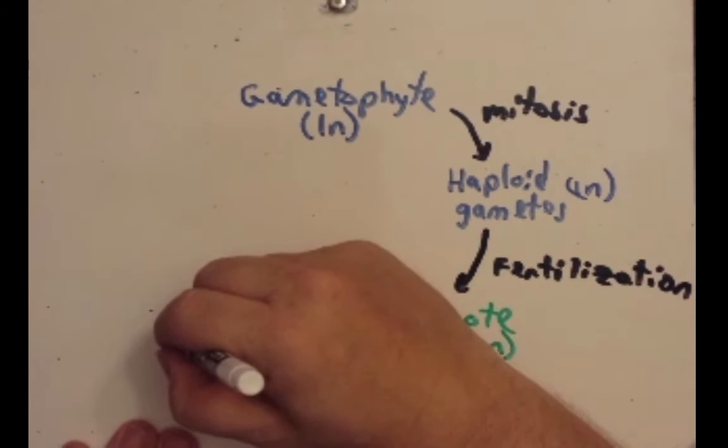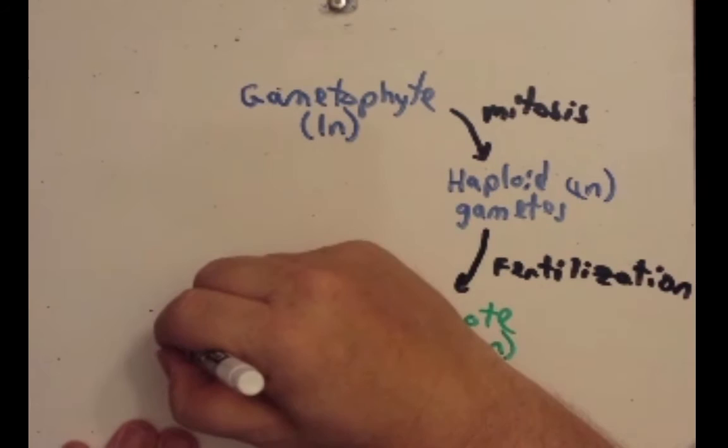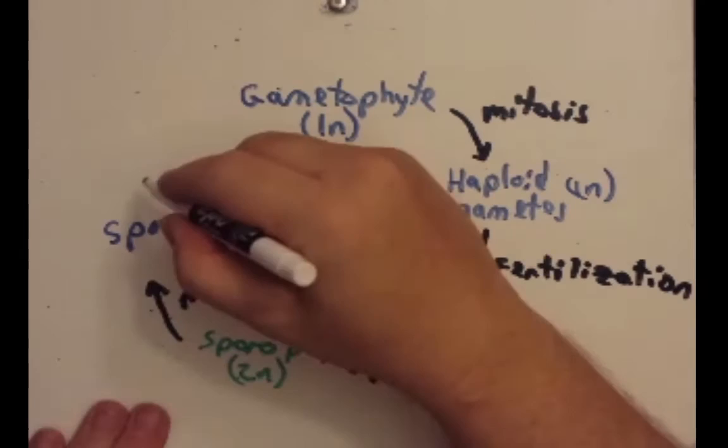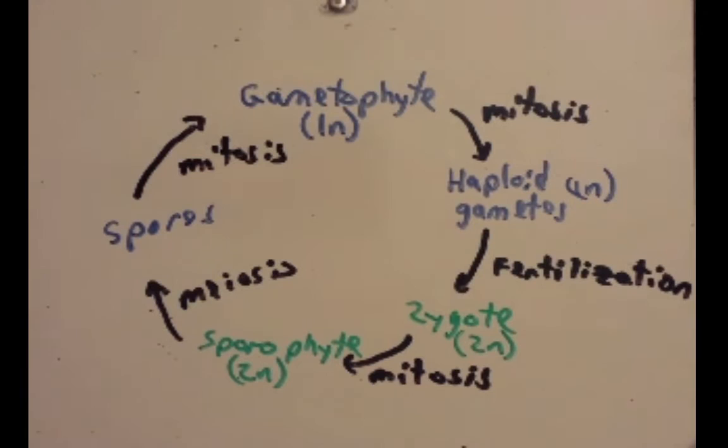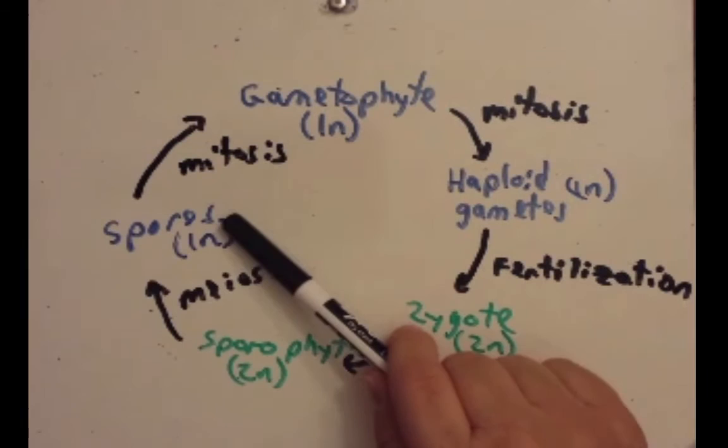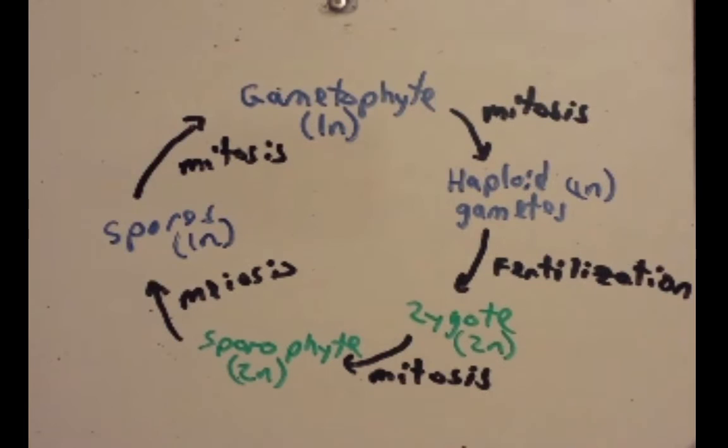The sporophytes will then undergo meiosis to produce spores. And I'm going to go back to blue because these spores through mitosis will generate the gametophyte generation once again. I should mention since we're using meiosis going from 2N the products now will be 1N spores. They go through mitosis to generate the same haploid gametophyte, but it's a multicellular structure.